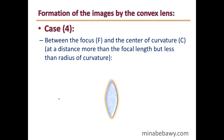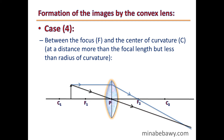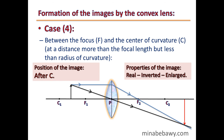Case 4 — the object is located between the focus and the center of curvature, at a distance greater than the focal length but less than the radius of curvature. The first light ray is parallel to the principal axis, and the second ray passes through the optical center without refraction. The image is formed beyond C, at a distance greater than the radius of curvature. The image is real, inverted, and magnified.